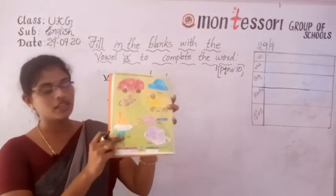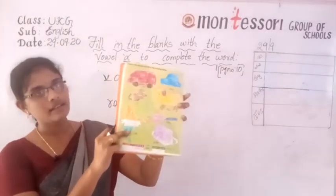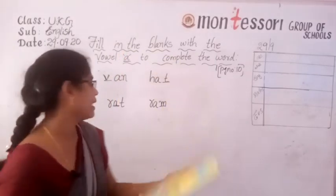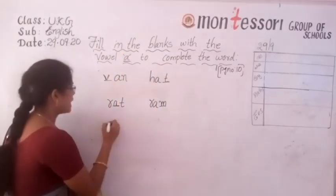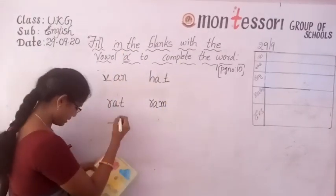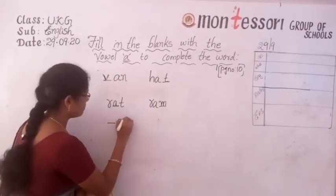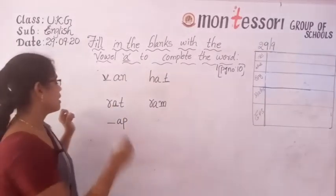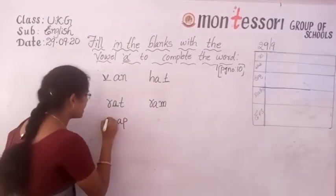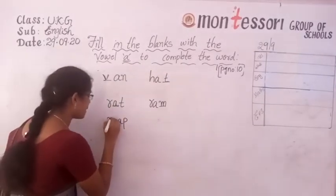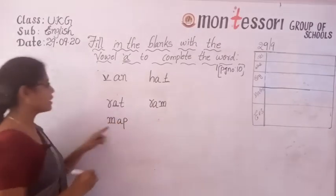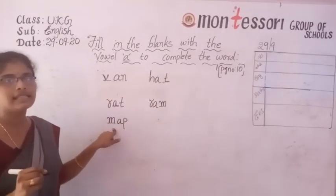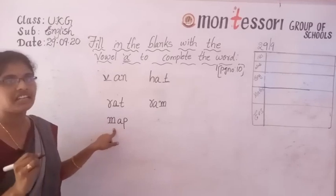Now what is this picture? It is our map. They have given dash-A-P. What is the spelling of map? M-A-P, map. We have to write M here. Write with pencil very neatly.